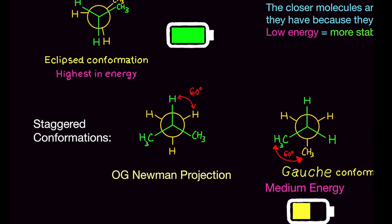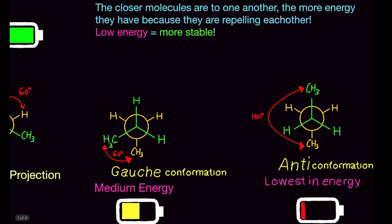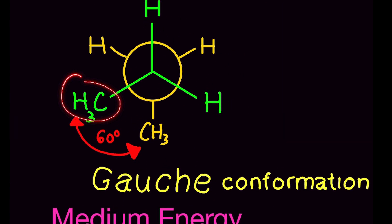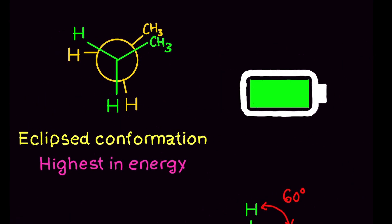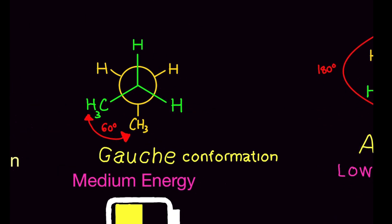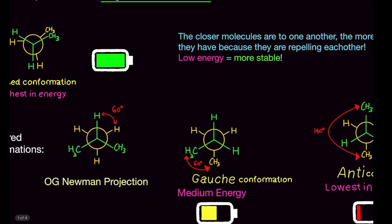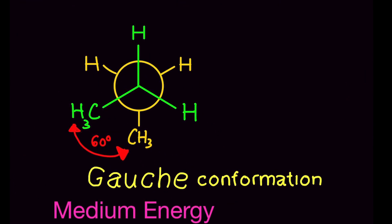Now let's move on to staggered conformations. We have our original Newman projections where every group is 60 degrees away from each other, no matter what the functional group is. What we're not used to is gauche conformations, also known as the medium energy state. This is when the bigger functional groups — not the hydrogens — are 60 degrees away from each other, so they're adjacent to each other, not on top of each other like the eclipsed, but right next to each other. This is the gauche conformation — medium instability.